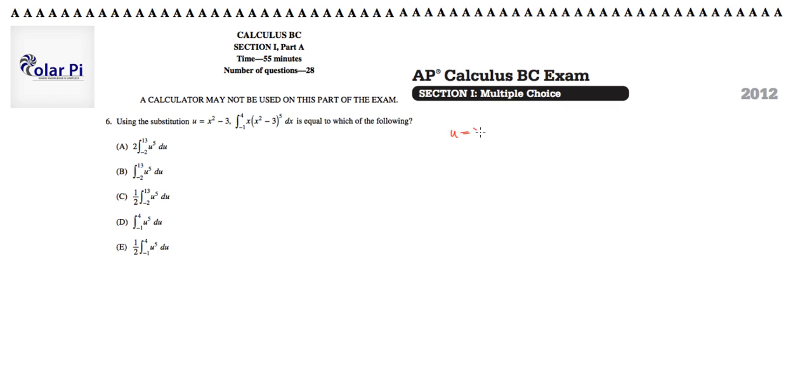So u is equal to x squared minus 3. So why don't we get to finding du, because we know we need to. So du then has to be 2x dx. So solving for dx, we get du divided by 2x will equal dx.